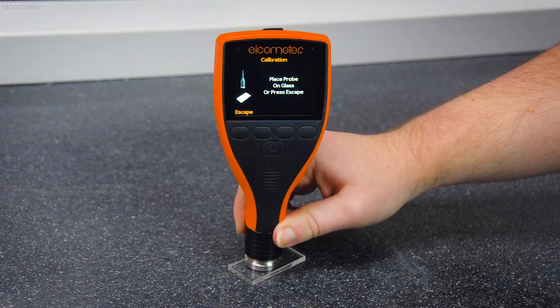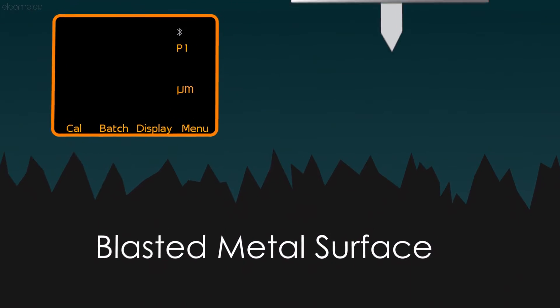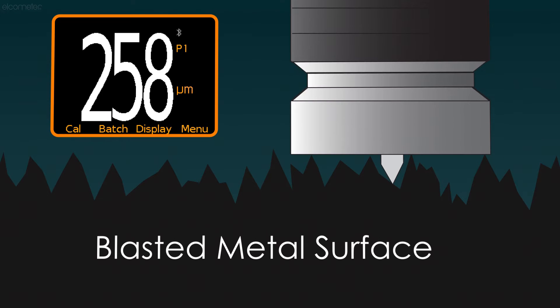Simply zero the gauge on glass, and when the gauge is placed on the surface, a spring-mounted needle measures the depth of the profile from the peaks of the profile at that particular point.